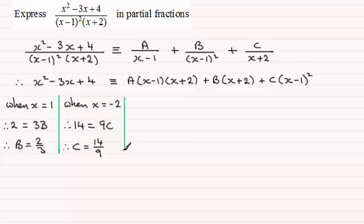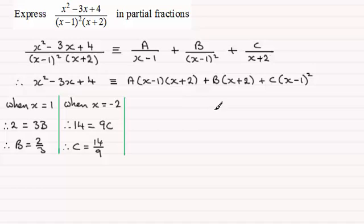Now when it comes to working out the constant A, trying to find a value of x that makes any one of these brackets zero — well, we've run out of values. So what do we do? There are several ways we can do this and I'll show you both methods. Because this is an identity we can choose any other value to put in for x, so it makes sense to choose a simple value. Let's say x equals 0, but I'd encourage you to try lots of other values — you should find you end up with exactly the same value of A.